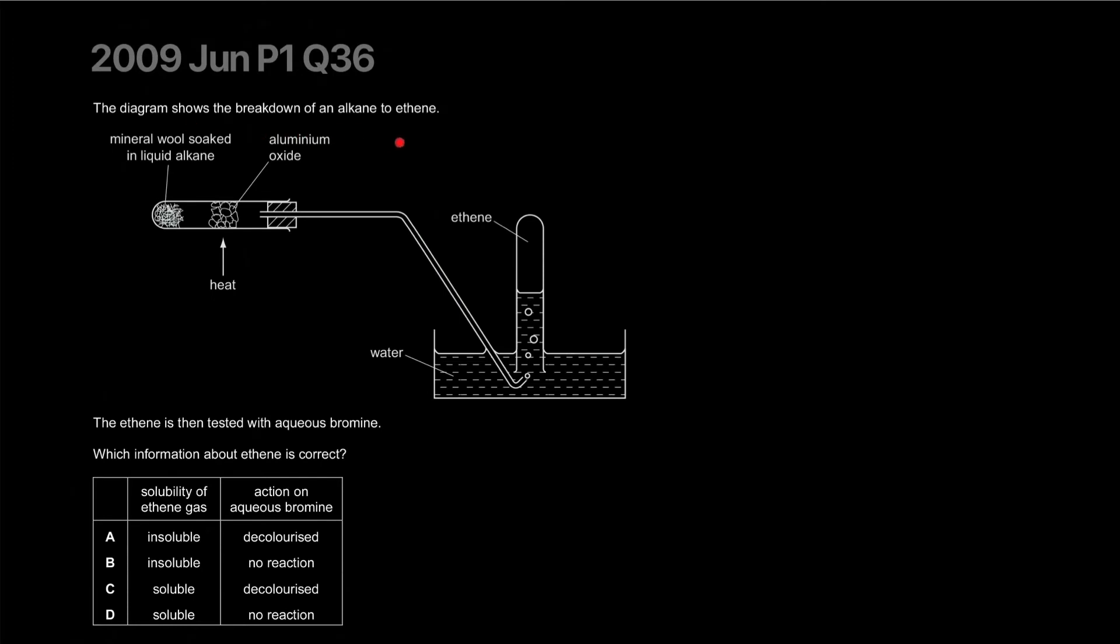The diagram shows the breakdown of an alkane to ethene - okay, cracking. The ethene is then tested with aqueous bromine. Which information about - so they're just talking about ethene solubility. Ethene, being nonpolar, is completely insoluble, and it'll decolorize aqueous bromine when you bubble through it. The correct answer is A.